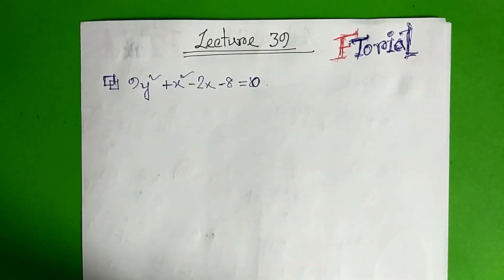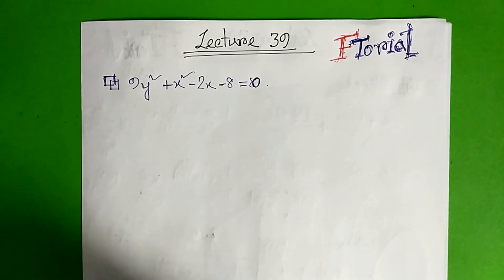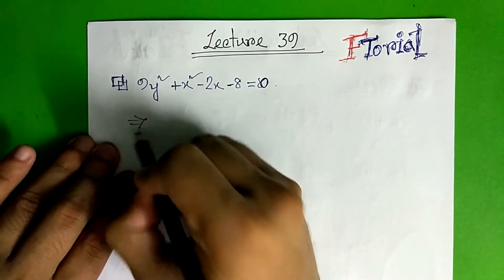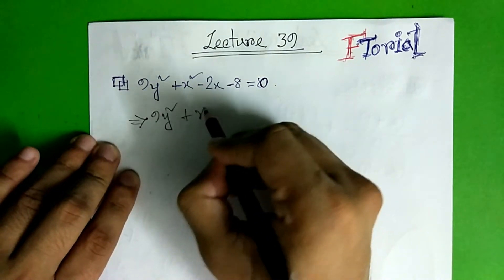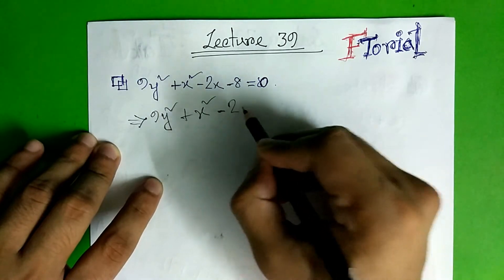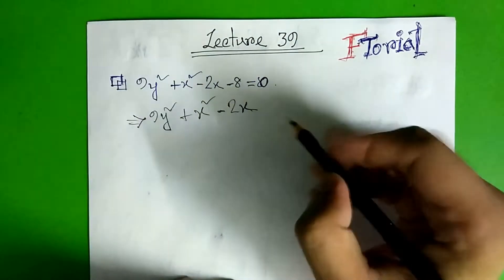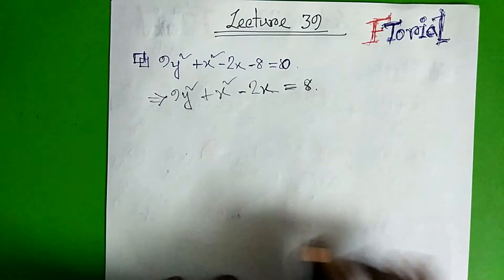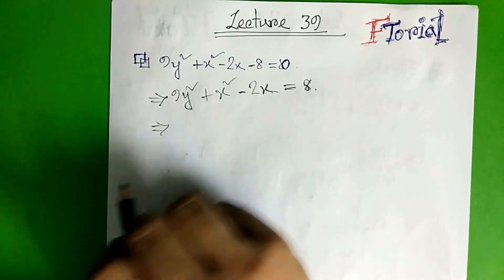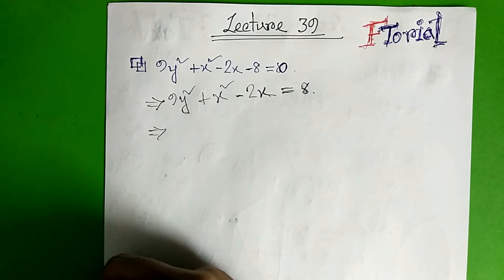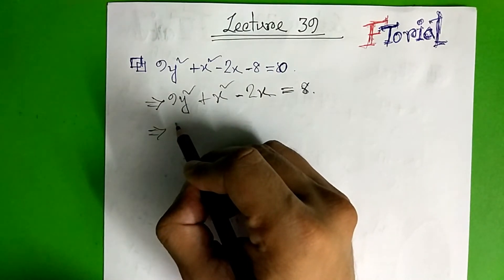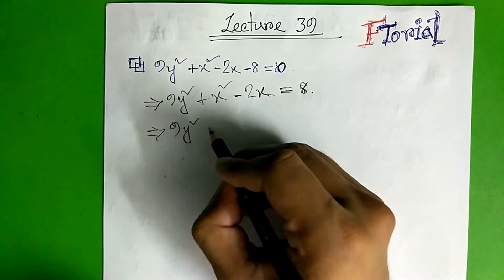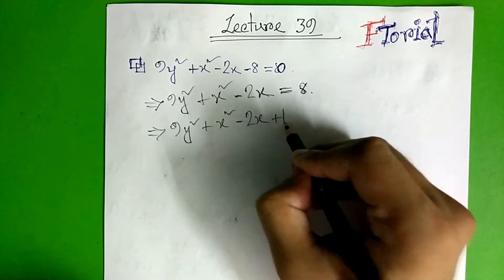Just to see the question, we have a question. We can see the form that we have done. So we can take an 8 out of 9y square plus x square minus 2x, then minus 8k is added. So minus 8 plus 8 plus 8k is added, then J to the whole square is added. So we can take an 8 out of 9y square plus x square minus 2x plus 1, plus 1 external.